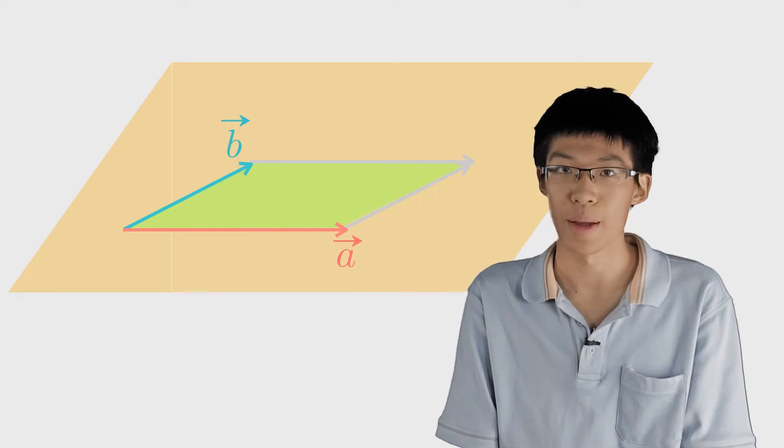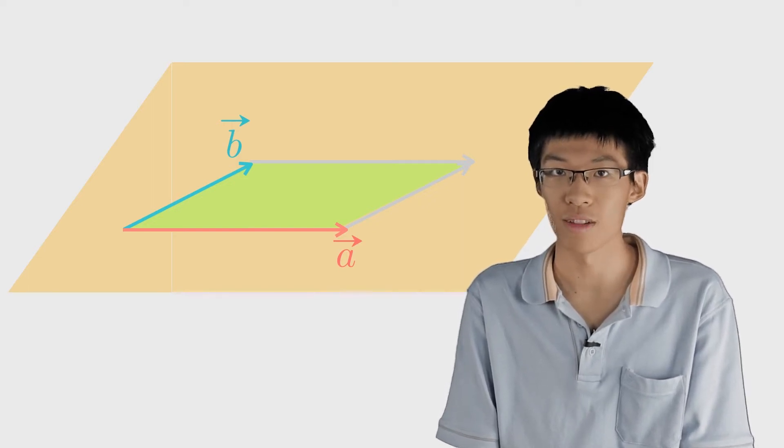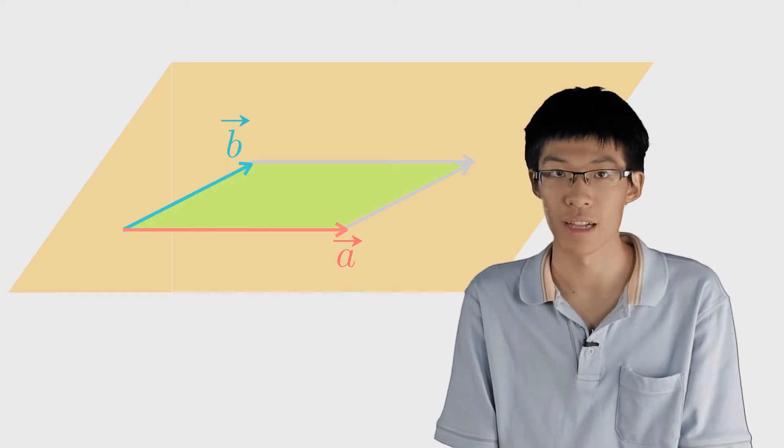There are two vectors that have magnitude equal to the area of the parallelogram and whose directions are normal to the parallelogram.